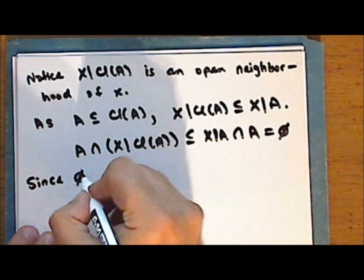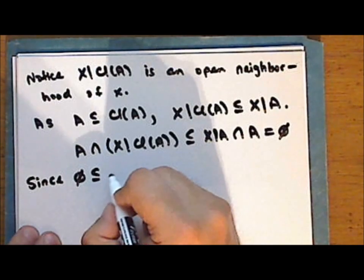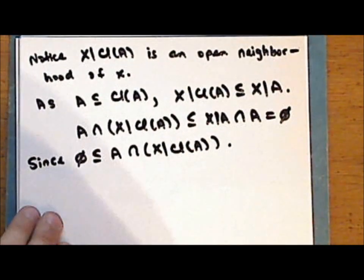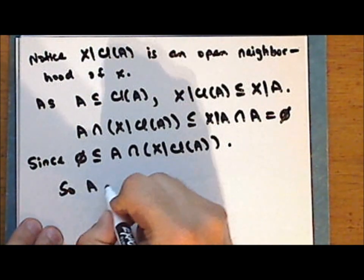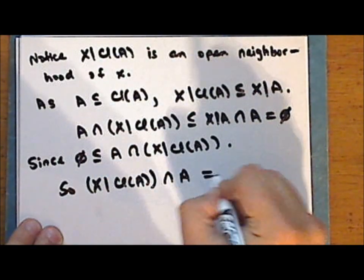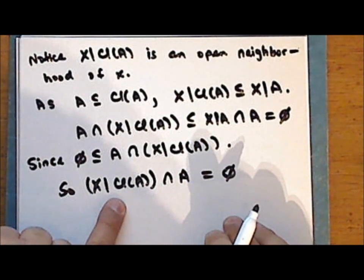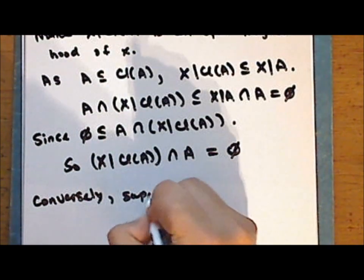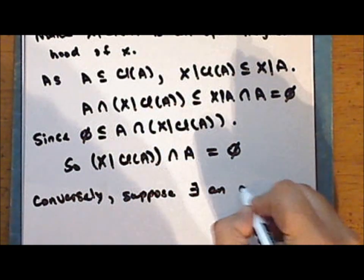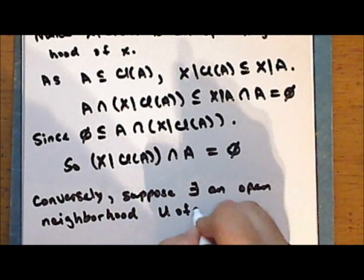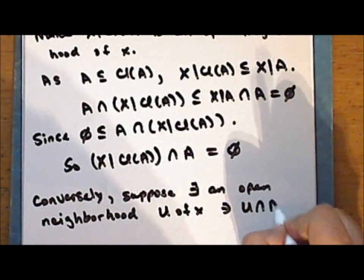Since the empty set is always a subset of any set, in particular it is a subset of the intersection of A with the complement of the closure of A. So we have set inclusion in both directions, and therefore the intersection of the complement of the closure of A with A is empty. The complement of the closure of A is an open neighborhood of x. Conversely, suppose there exists an open neighborhood U of x such that the intersection of U with A is empty.